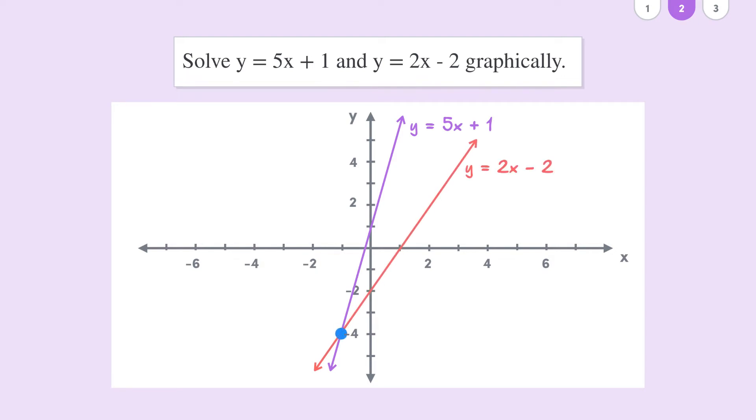Well, this point of intersection is a common answer to both equations. If we go back to our cafe menu example, this point would represent the items that are the same on both menus. So here we have the coordinate minus 1, minus 4.